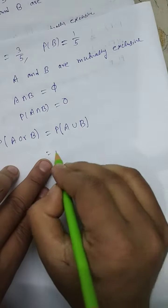So probability of A or B equals 4/5. That is the answer. Namaste.